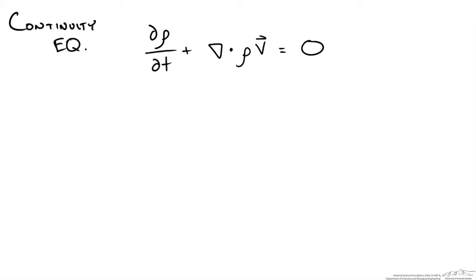If we take a look at this continuity equation in its mathematical operator form shown here, we could also expand this gradient operator. The gradient operator dot product of density times the velocity vector can be expanded to be equal to the following.